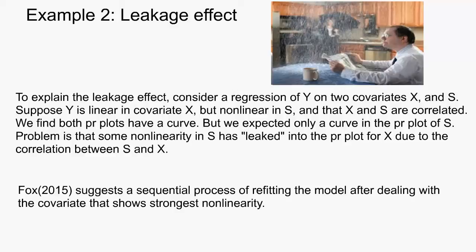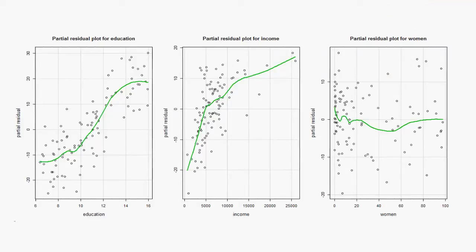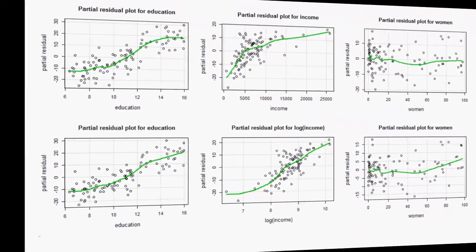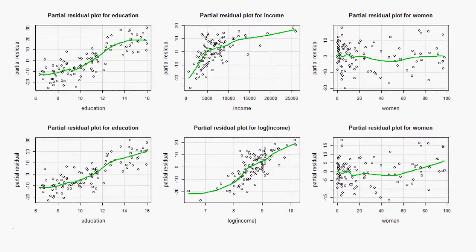Fox suggests a sequential process of refitting the model after dealing with the covariate that shows the strongest nonlinearity. Revisiting the prestige data and looking at PR plots for all three covariates, there appear to be curves in the PR plots for education and income, stronger in income. Correlation between income and education is around 0.6. Following Fox, we deal with income and refit with log income in place of income. The strong curve in income disappears after transforming income, and the curve in education becomes less pronounced — suggesting the leakage effect. If you think there is still nonlinearity between education and prestige, then try transforming education.